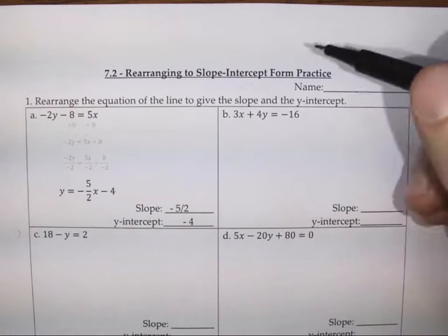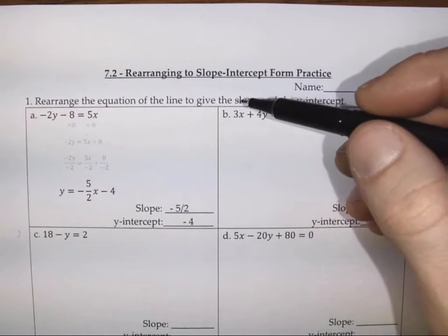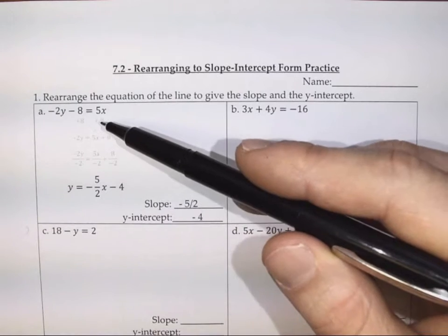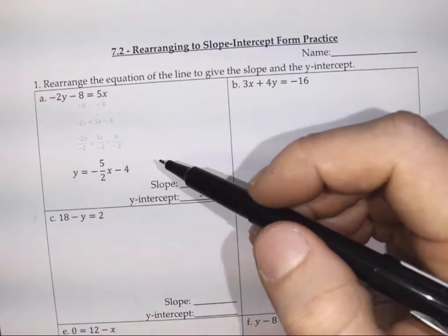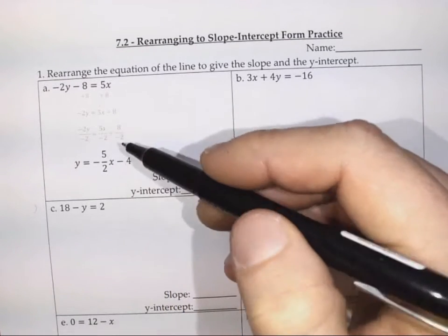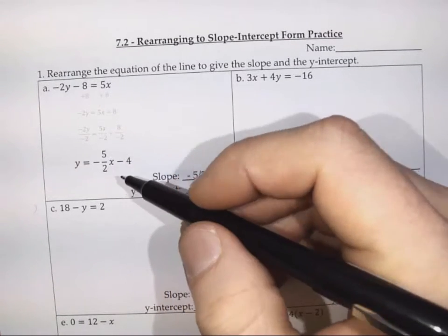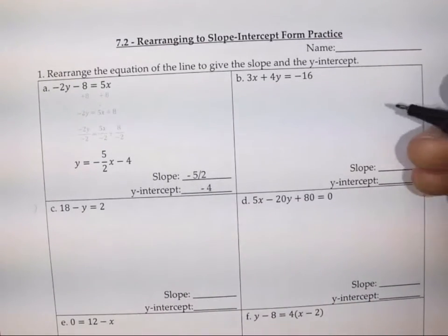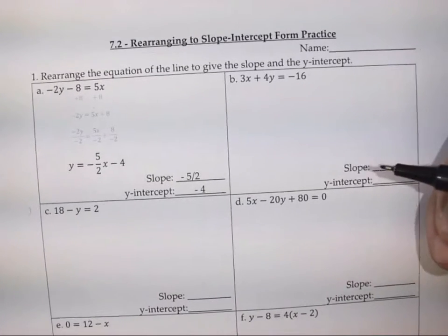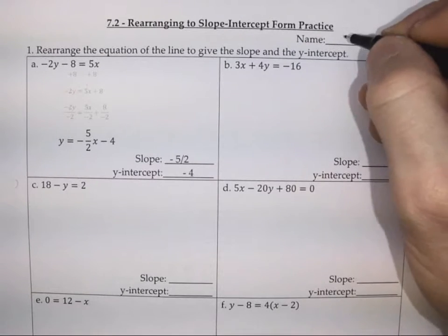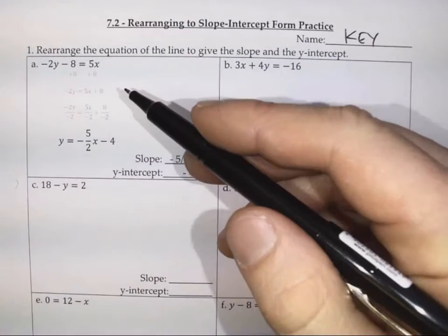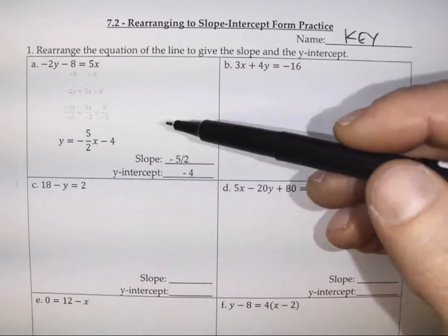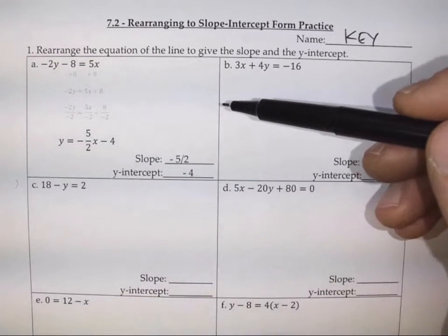For 7.2, our goal is to take algebraic expressions which have an x and a y in them, and rearrange them so that we know the slope of the line they represent and what the y-intercept would be. If we know that, it's sufficient information to plot these lines. As I go through these steps, I'm going to draw a little sketch of the line itself.